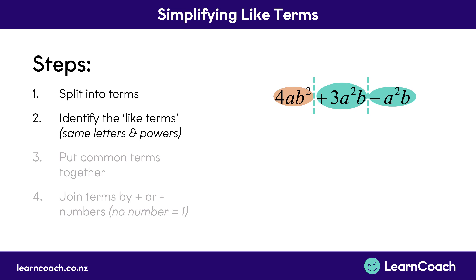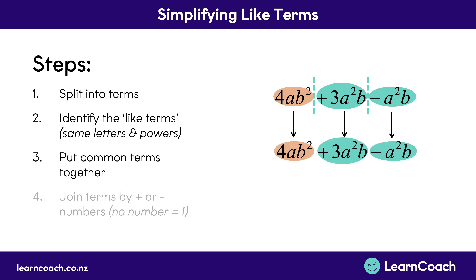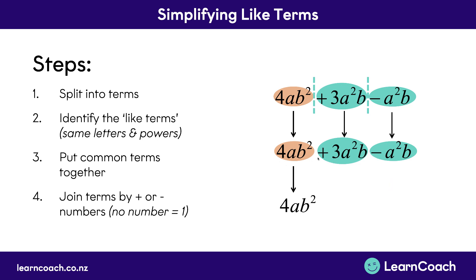The next thing I'd recommend — it's not essential but reduces errors in exams — is to write all of these like terms out next to each other. That's step three. Step four is to join the like terms together by their numbers. This has a plus 3, but this one has no number at all — if there's no number it means it's a 1, so this would be minus 1. The first term has no like terms, so you just write it out: 4ab squared. Then the last two: plus 3 and minus 1 makes positive 2, so we write plus 2a squared b. That's your simplified expression.